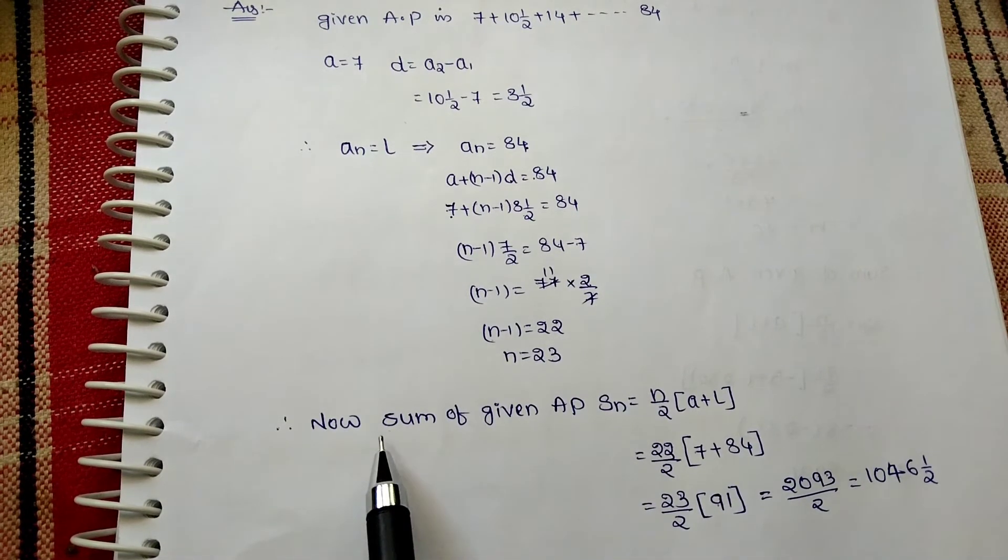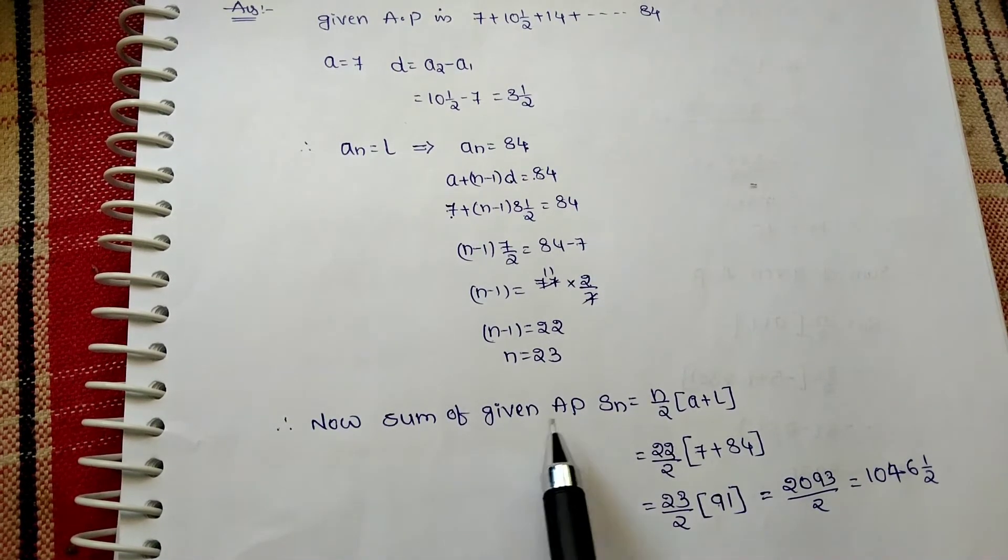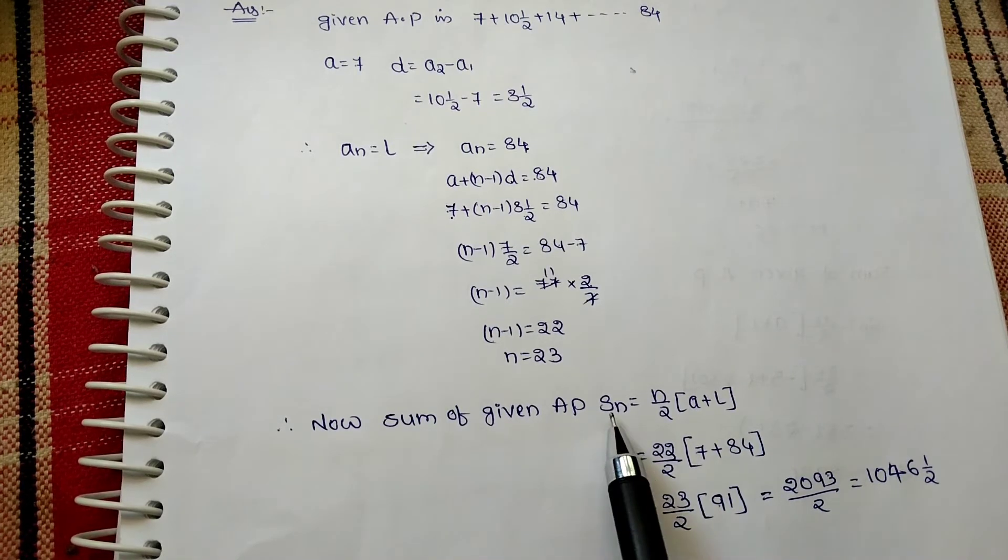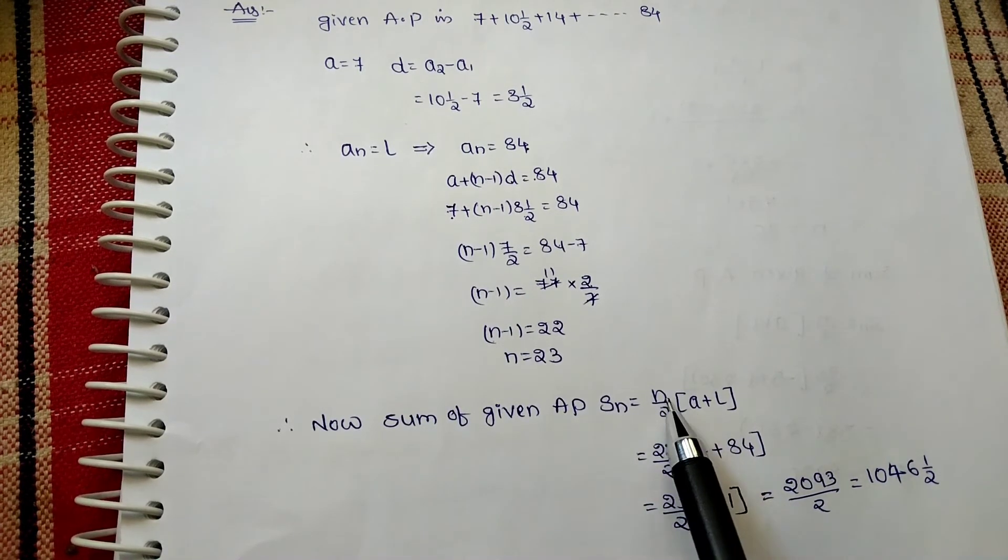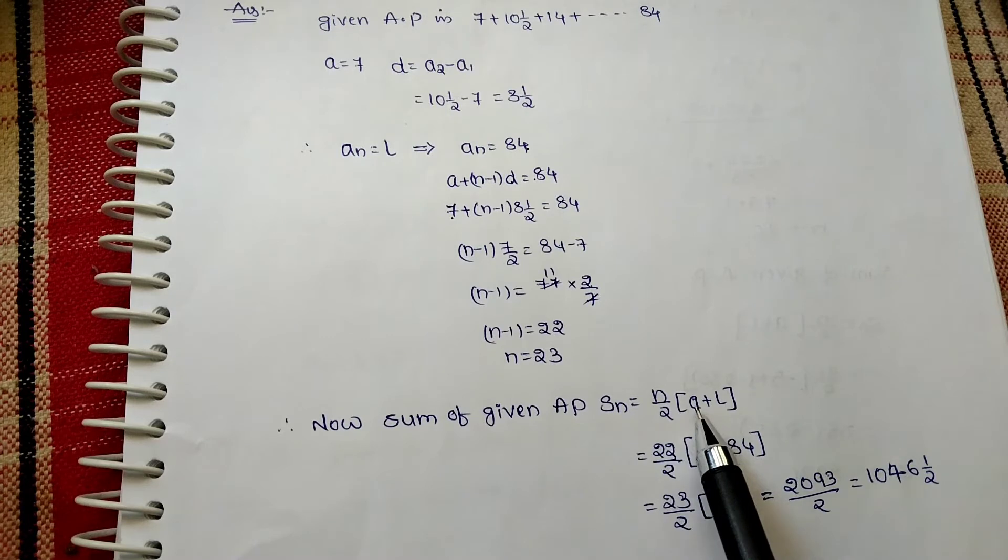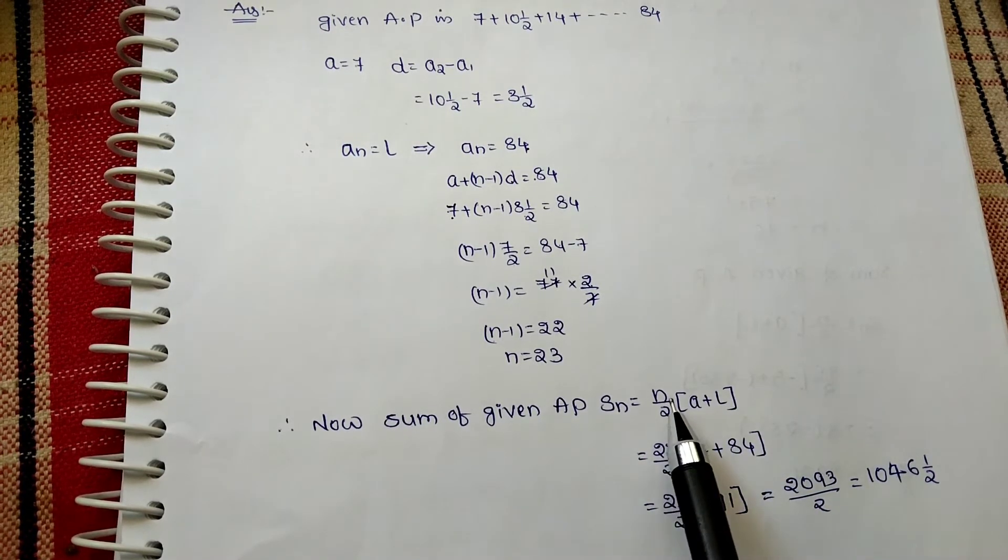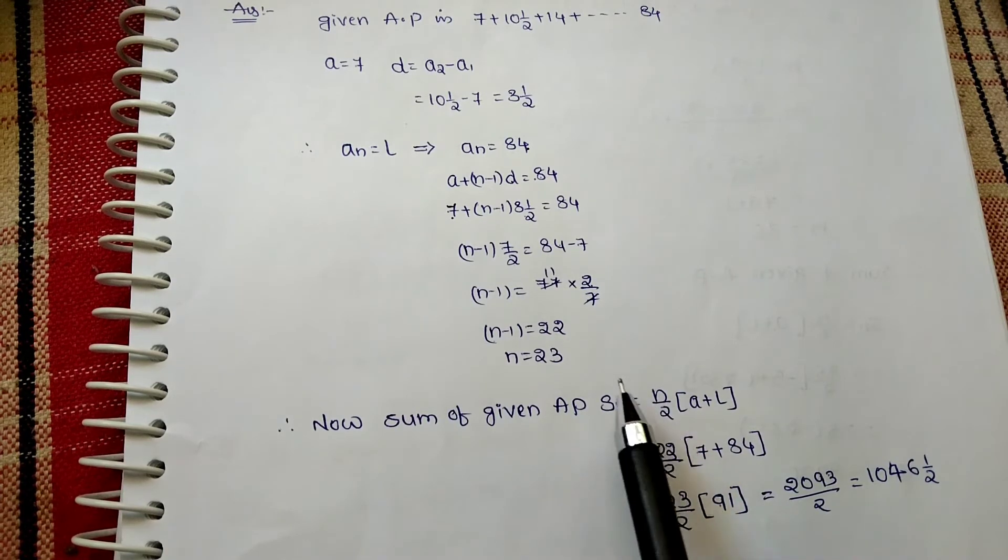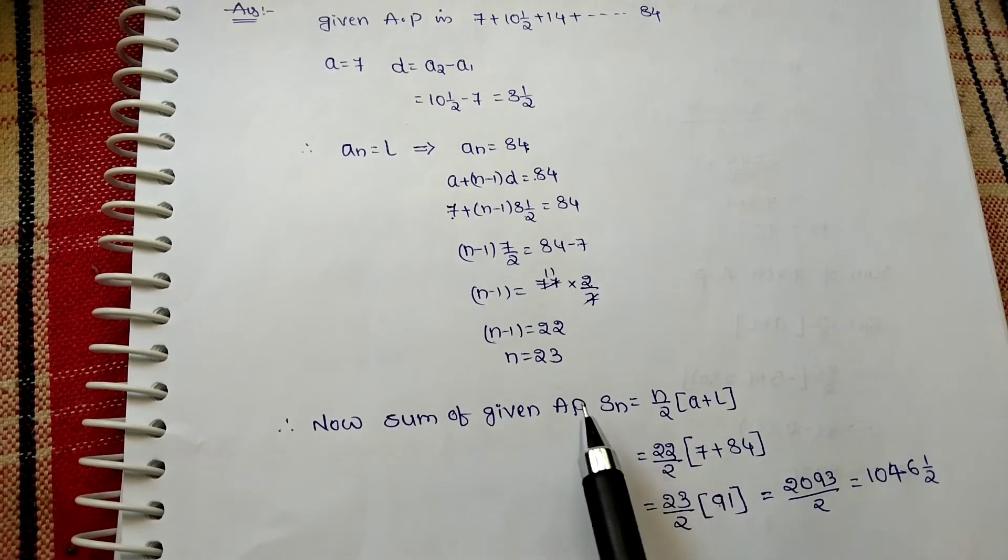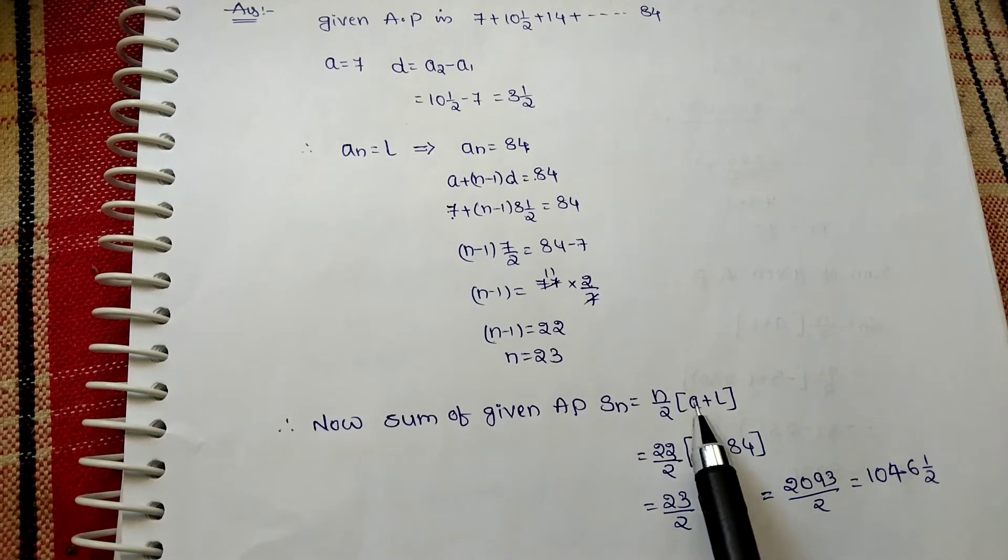Now we need to find sum of that given AP. Sn equals n/2 into a plus l, right? What is n here? n equals 23, n/2. a equals 7, l equals 84.